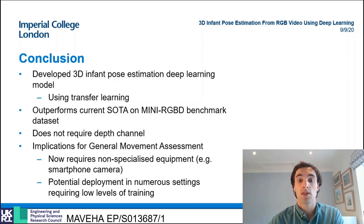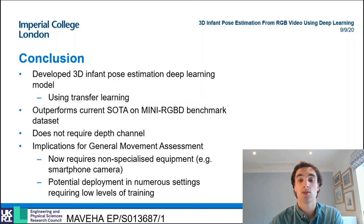This removal of the depth channel has implications for a variety of computer vision applications, especially the development of an automated general movement assessment described at the start of this presentation. Previously, such an assessment required a set of specialised RGBD cameras. However, due to the work of this project, such a tool has the potential to be run on a device as ubiquitous as a smartphone. Thank you for listening.